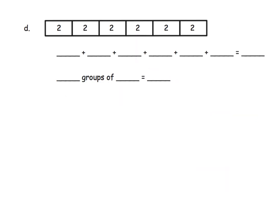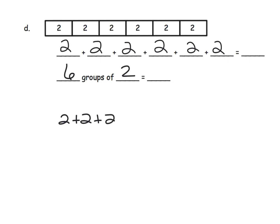This tape diagram leads toward using just abstract numbers instead of pictures. Instead of putting two smiley faces or two flowers inside each unit rectangle, we're now just putting an abstract two. So the repeated addition is two plus two plus two plus two plus two plus two — and counting the groups, one, two, three, four, five, six — we have six groups of two.